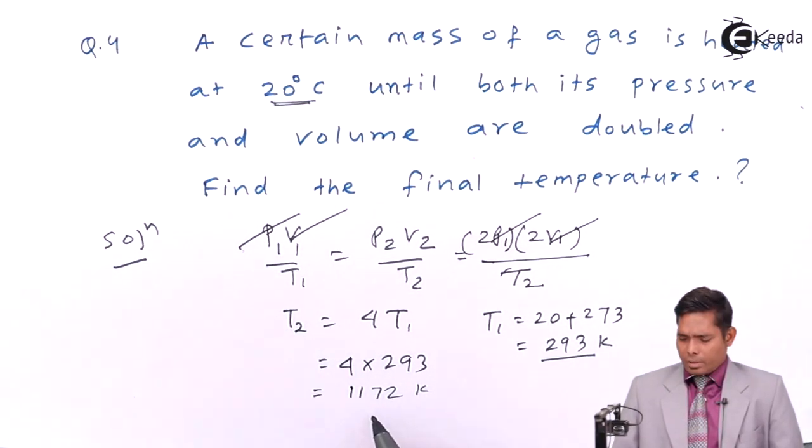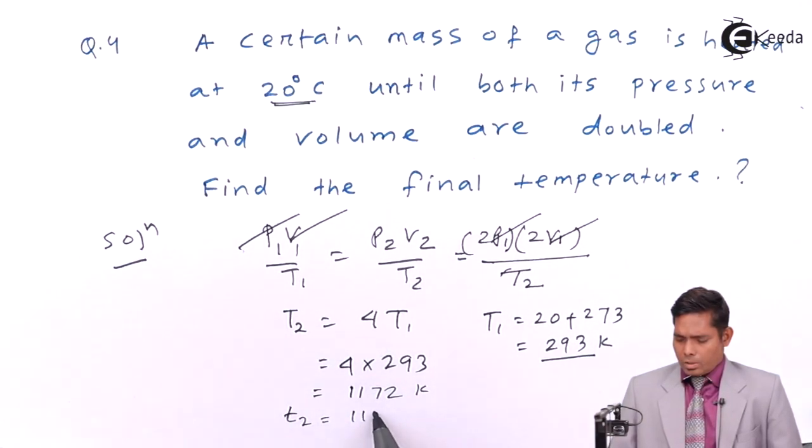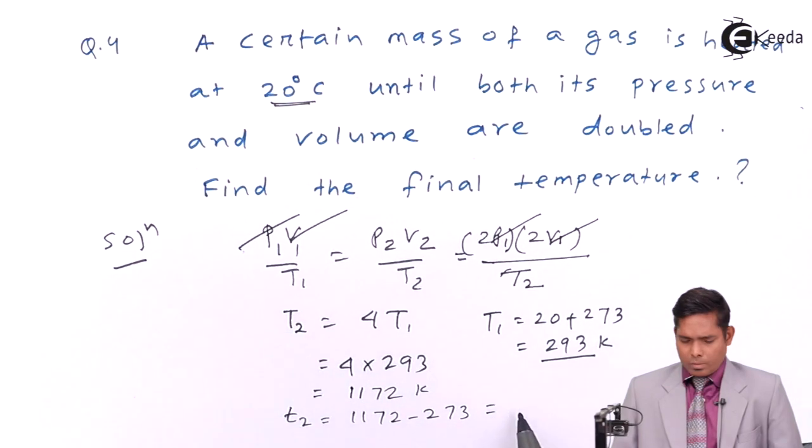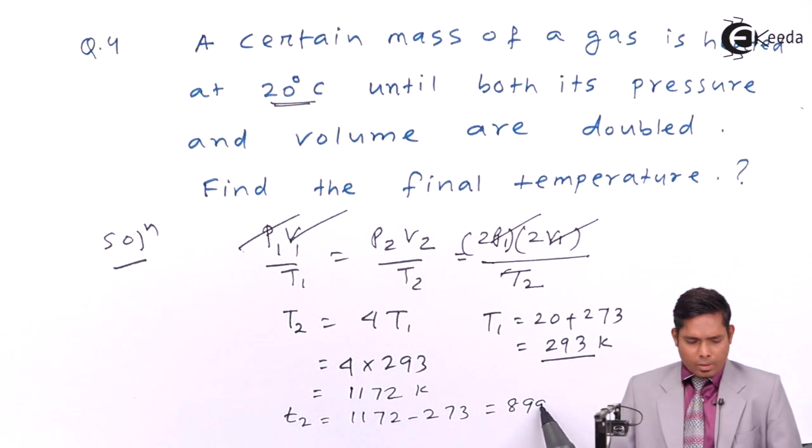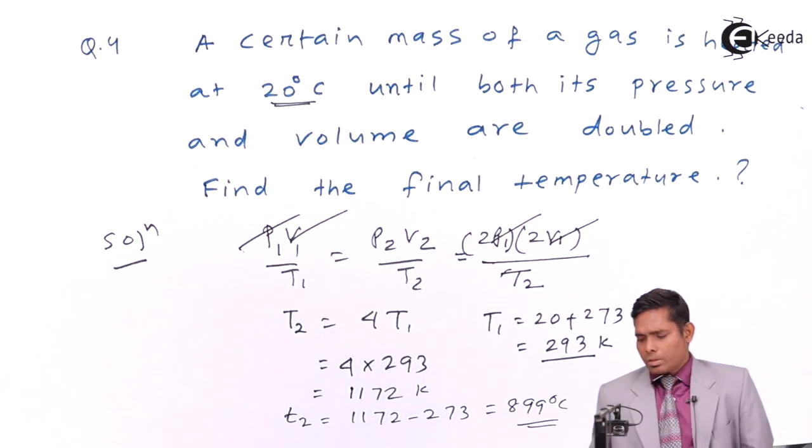And in centigrade if you want to write, then again you subtract this number. That is T2 is 1172 minus 273, that comes out to be 899 degrees centigrade. So this is the answer to this question.